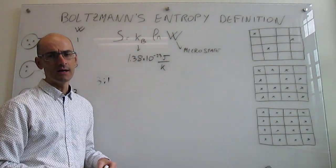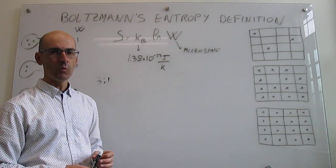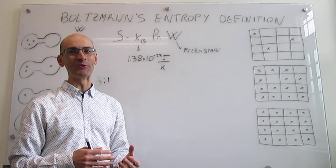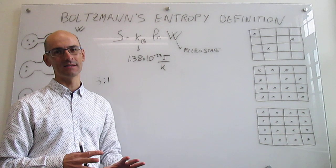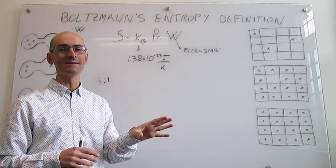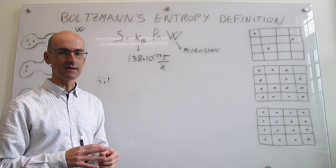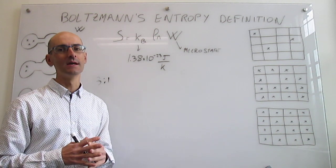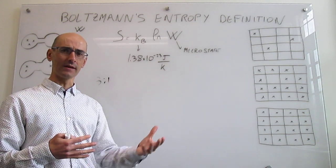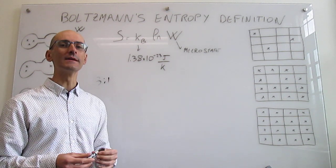Now let's use Boltzmann's definition of entropy and the concept of microstates to understand something we know from prior work: gases are generally more entropic than liquids, and liquids more than solids. At the same temperature, the gas phase of a substance will have a higher molar entropy than the liquid phase, which will be higher than the solid phase. We'll justify this using Boltzmann's definition of entropy and a crude 2D lattice model.